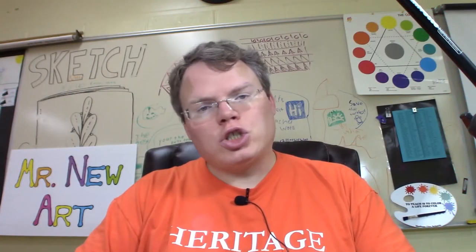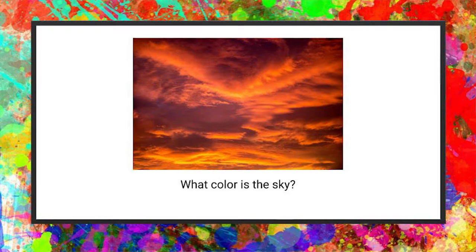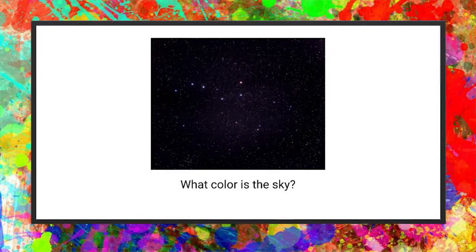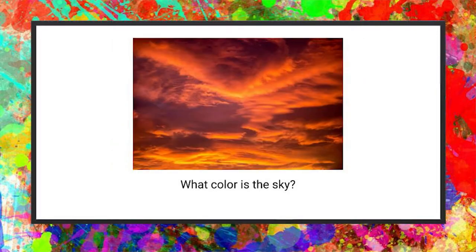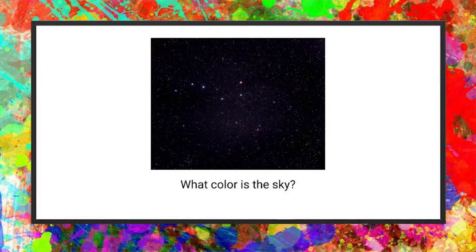The first question sounds like an easy one: what color is the sky? Of course it's blue — right? Except when it's not. The sky could be blue during the day, but other times it's red, orange, or yellow. Other times it's gray or black, and sometimes it's black with little speckles of light shining through.